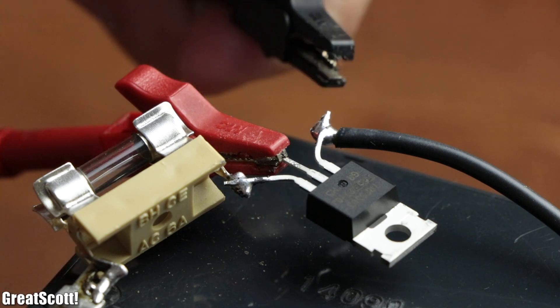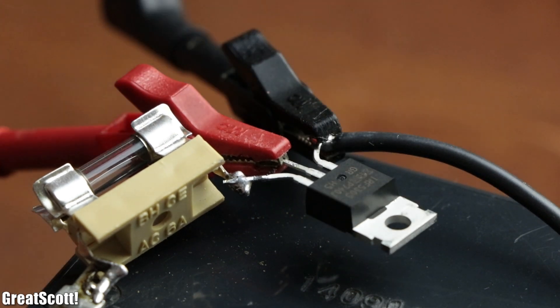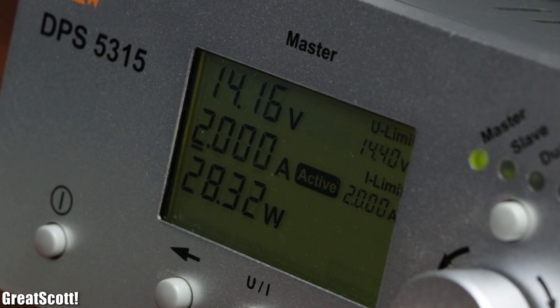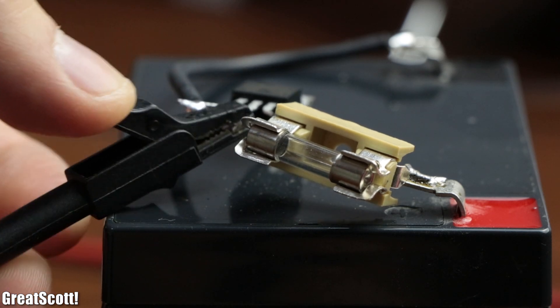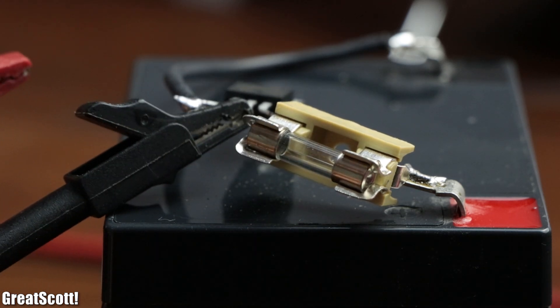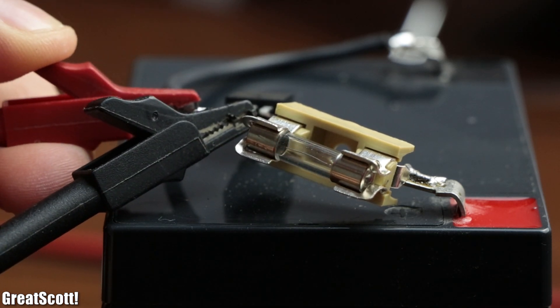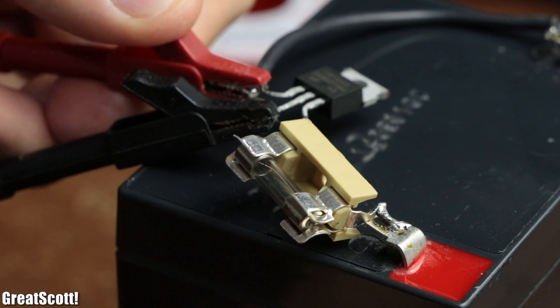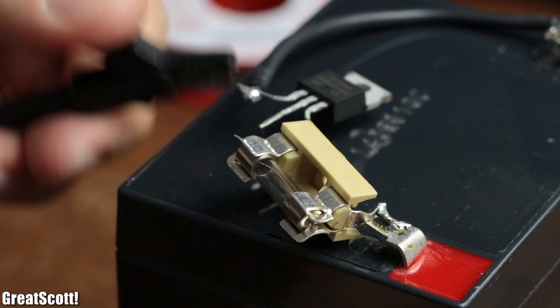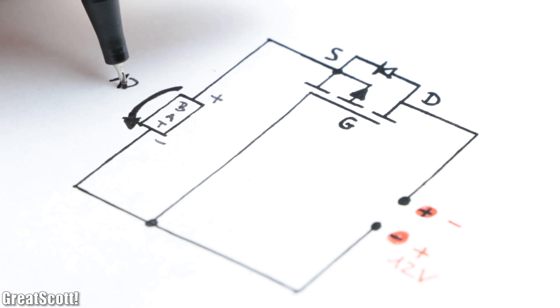As you can see, by applying the voltage the correct way, the battery charges like usual. But if we connect the battery the wrong way, the fuse I added for safety reasons keeps popping, which means there is still a problem.